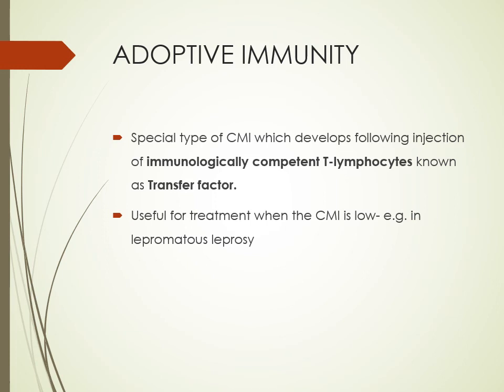Adoptive immunity is sometimes confused with adaptive immunity — adaptive immunity is the acquired immunity, but adoptive immunity is different. Adoptive immunity is a special type of cell-mediated immunity that follows the injection of immunologically competent T lymphocytes — known as the transfer factor. This is useful for treatment in persons with low cell-mediated immunity, such as in lepromatous leprosy, where T cell or cell-mediated immunity is very poor. Injecting competent T lymphocytes — that is adoptive immunity.